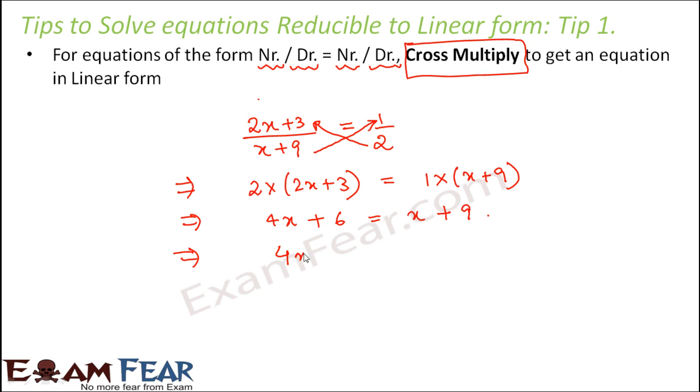Now you put all the variables on one side like this and all the constants on the other side. So you get 4x minus x equals 9 minus 6, which gives 3x equals 3, or x equals 3 divided by 3 that is equal to 1. So x equals 1 would be a solution for this equation.